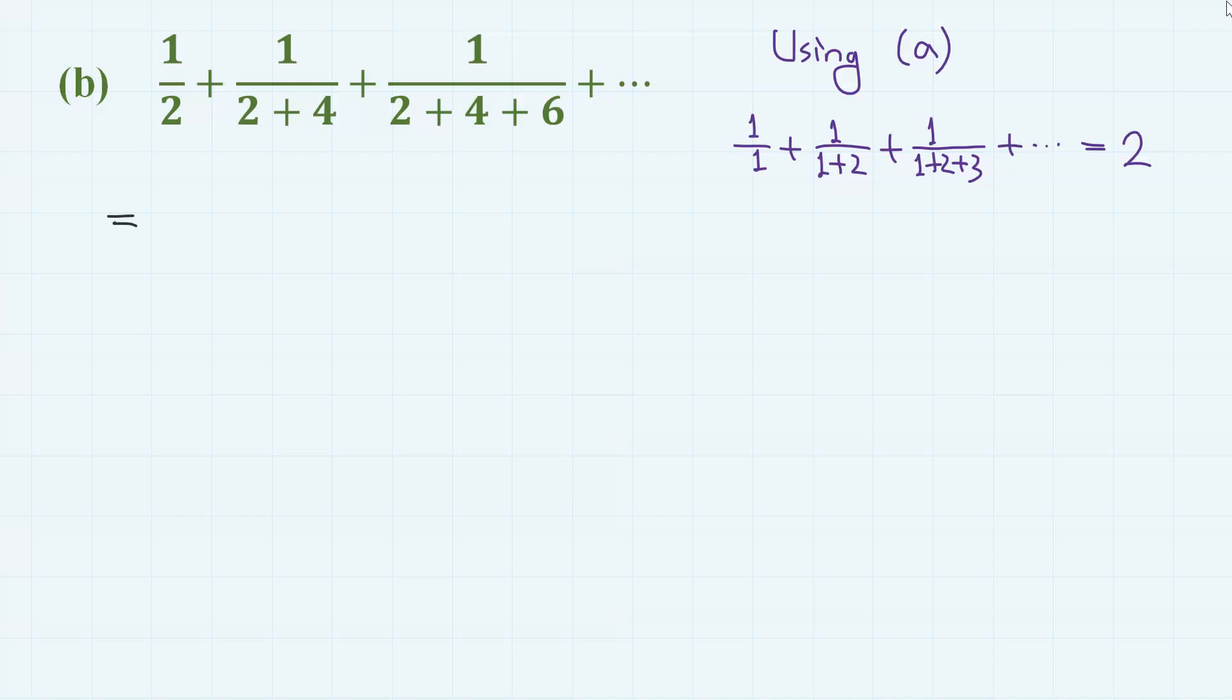That is, this series is, if we take out 1 over 2 to the front, then we have 1 over 1 plus 1 over 1 plus 2 plus 1 over 1 plus 2 plus 3, which is the series from the previous problem. So, using the previous result, the sum is 1 half times 2, which is 1.